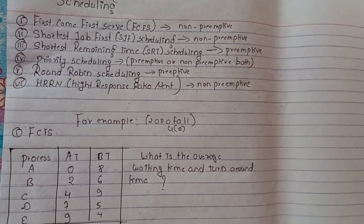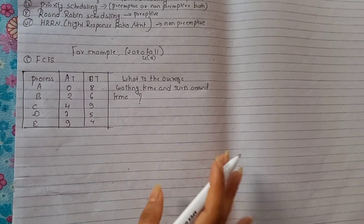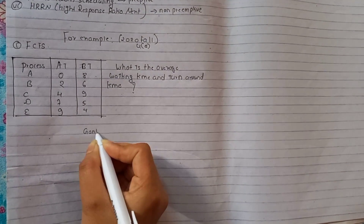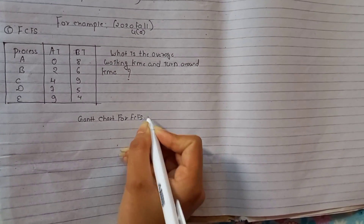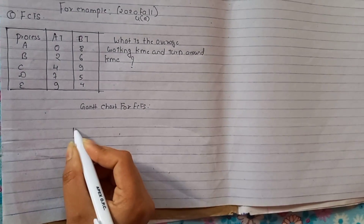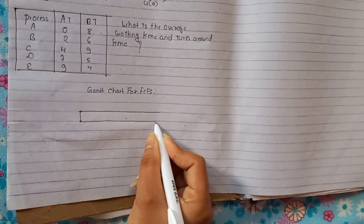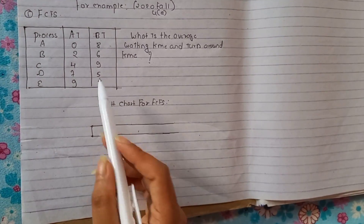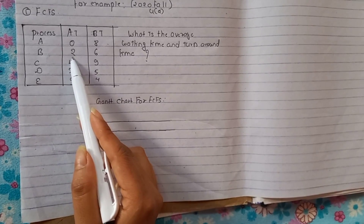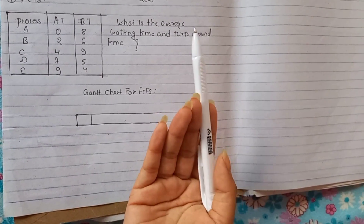We need to find the waiting time and turnaround time. In FCFS, the process that arrives first gets executed — the process which comes to the CPU first gets allocated. A process runs to completion and then the next one starts.